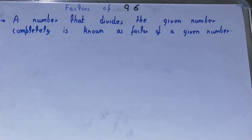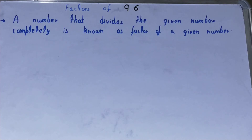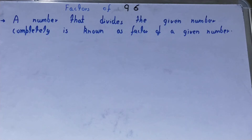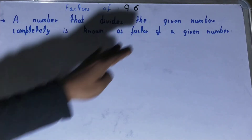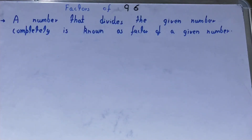Hello friends, in this video I'll be helping you with the factors of the number 96. Before we come to our main problem, it's important to have an idea about what a factor is. A factor is a number that divides the given number completely — completely meaning you get the remainder as zero.